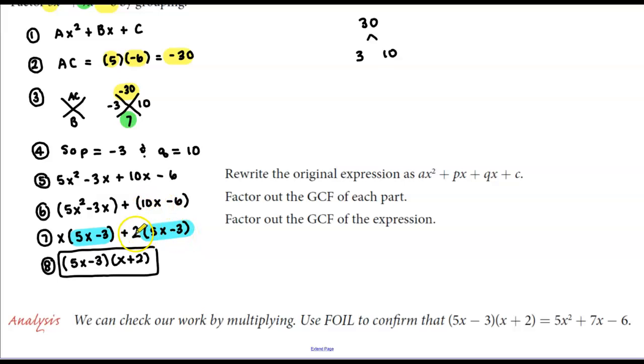We can factor out a 2 because 2 × 5x = 10x and 2 × -3 = -6. Now we factor out 5x - 3 from these two terms. So we have (5x - 3)(x + 2).